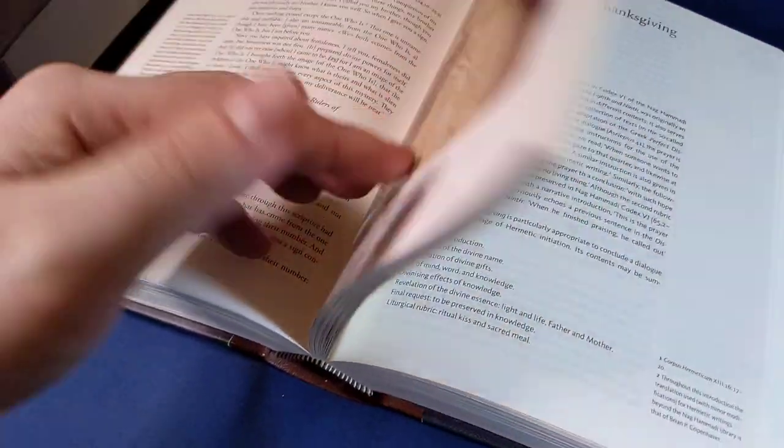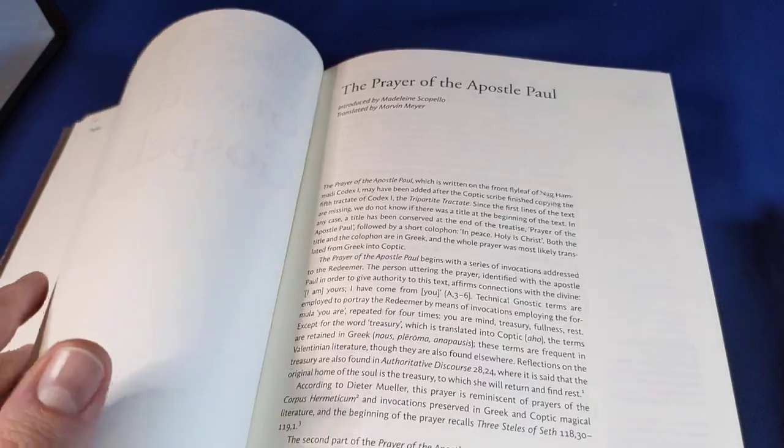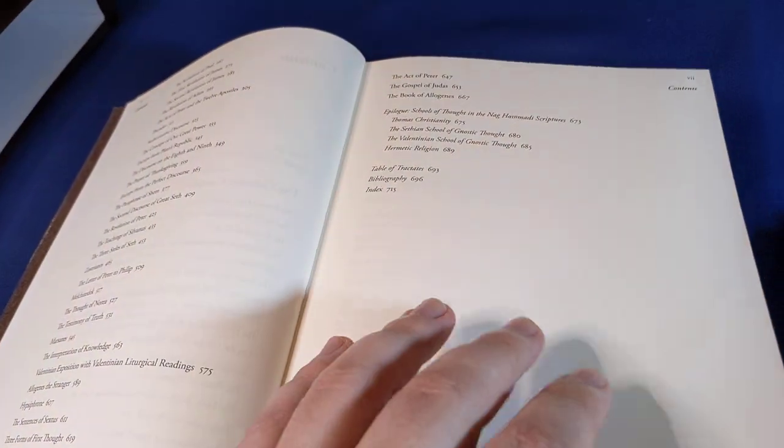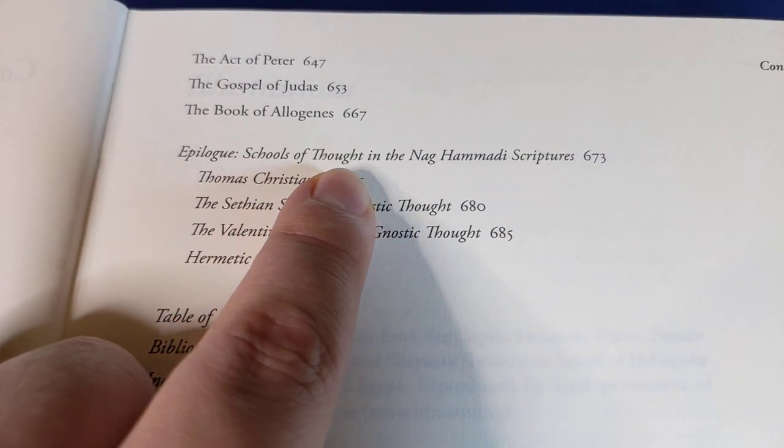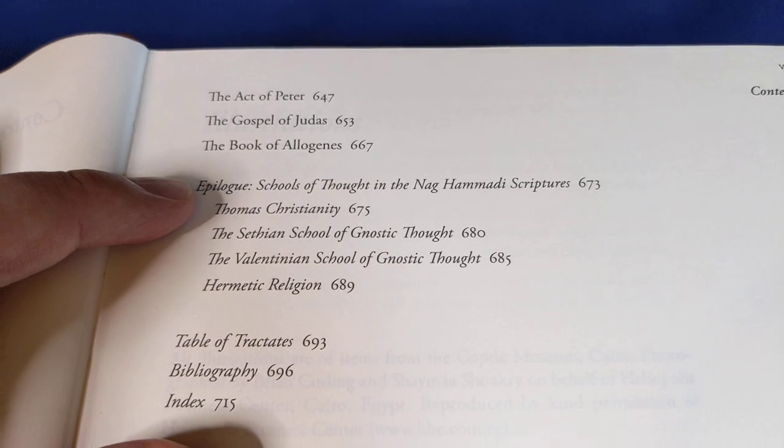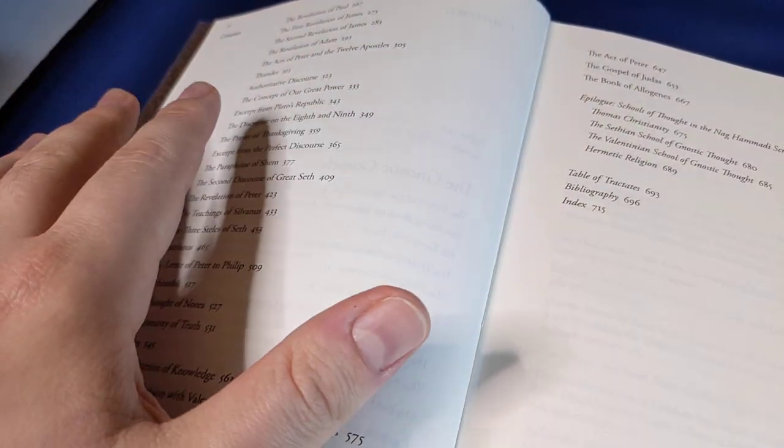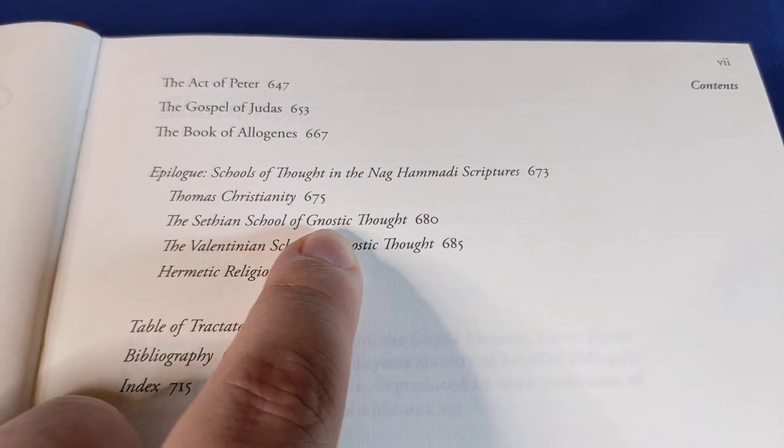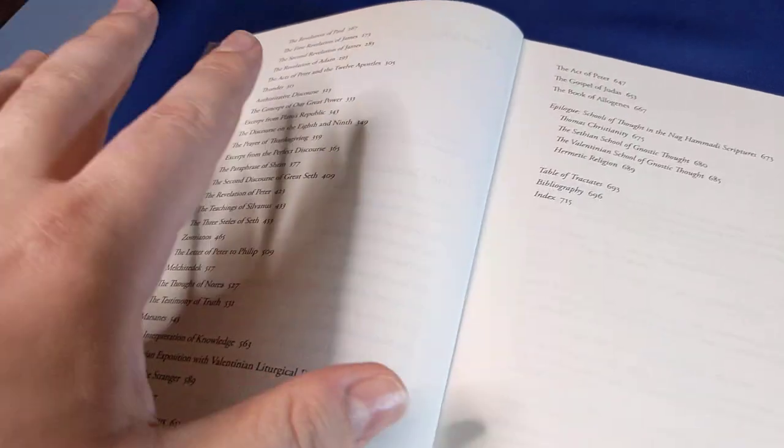What I really like about this edition, apart from the couple of colour plates that I'm showing you here, is the appendices. We have four essays here. The epilogue, the schools of thought in the Nag Hammadi scriptures is just an introduction to these four essays where they show us four different philosophies that are represented in the texts of the Nag Hammadi library. And so we get Thomas Christianity, the Sethian school of Gnostic thought, the Valentinian school of Gnostic thought, and Hermetic religion.